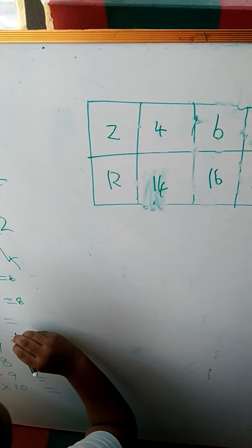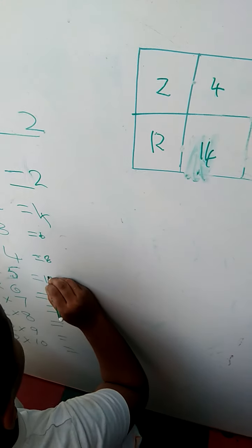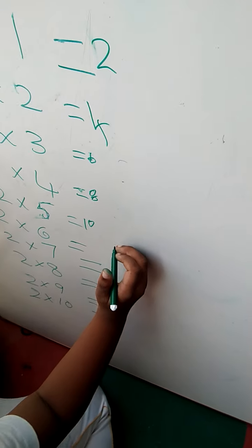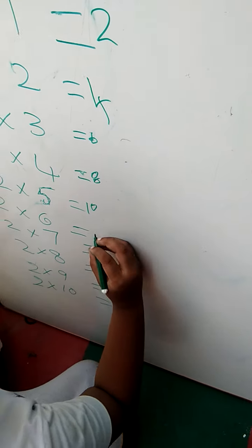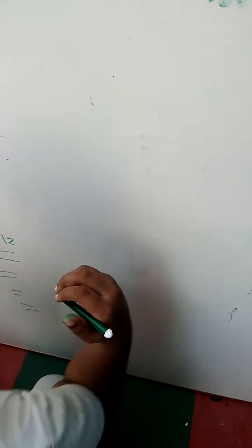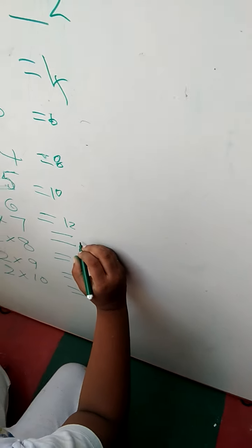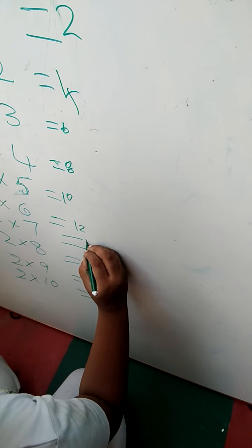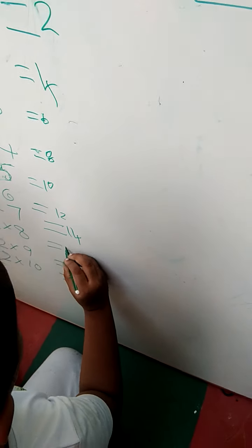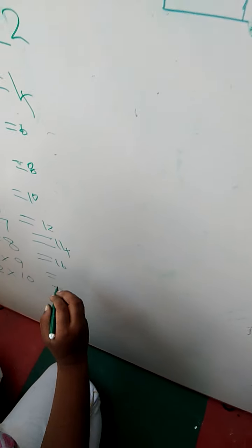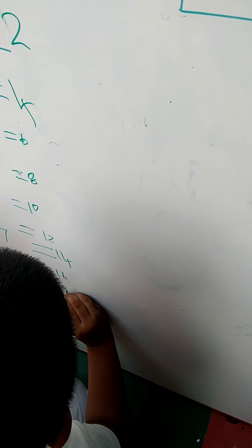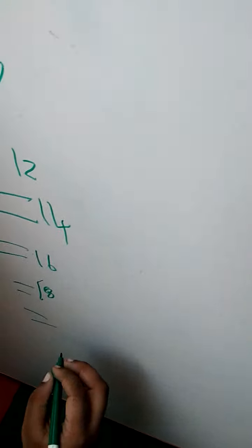Two fives are? Two six are? Here. What is this? Two sevens are? Two eights are? Two nines are? Eighteen. Two tens are? Twenty.